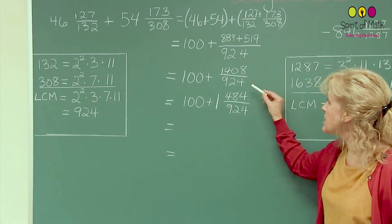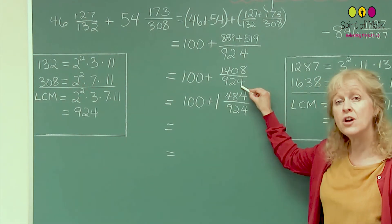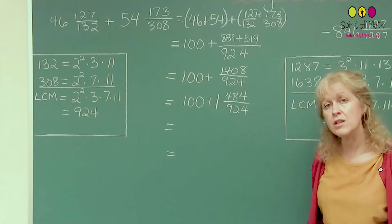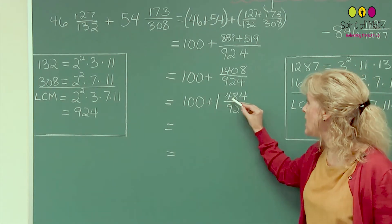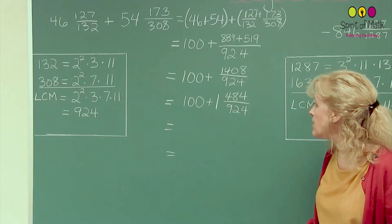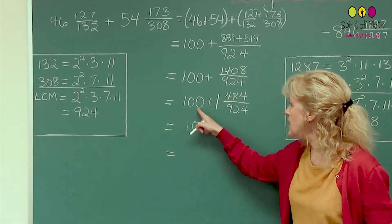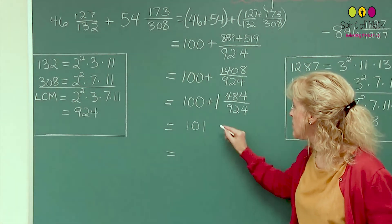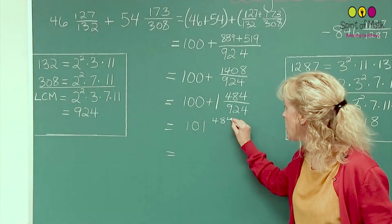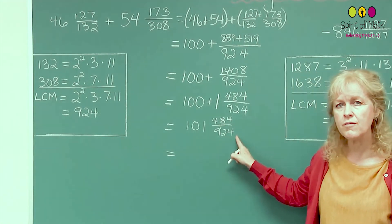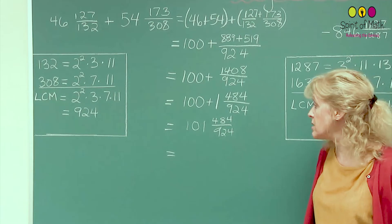And notice that that numerator is larger than the denominator so you have to make that into a mixed fraction before you can put these together. And that is 1 and 484 over 924. That, then you add the integer parts together, 101 and 484 over 924. If you don't know how to do that you may want to go back to the video that happened, the lesson before this.